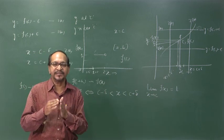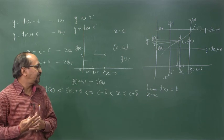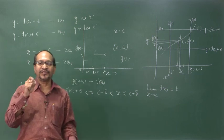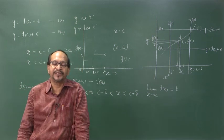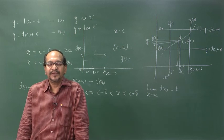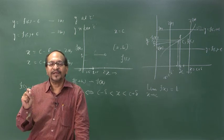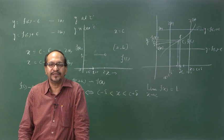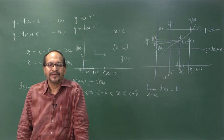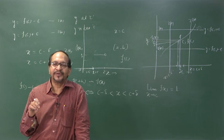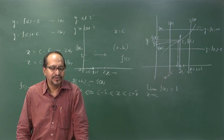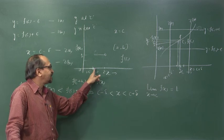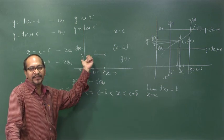Mathematically we write: limit as x tends to c of f(x) equals l. If this limiting value l equals the function value at c, we say the function is continuous. If a function is continuous at every point in the interval (a, b), we say the function is continuous in the entire interval. If it is not continuous at a point, we call it discontinuous — as with the greatest integer function at x = 1, 2, and so on.